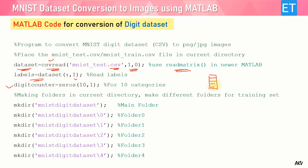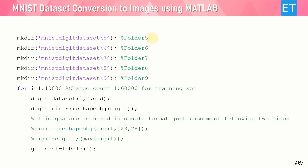I'm setting a digit counter of 10 rows and 1 column — a column array of 10 counters — to count how many images there are for each category. It also helps in deciding the file name of each image. Then there are commands to make the folders: mkdir for 'mnist_digit_dataset' as the main folder, then 10 subfolders for each digit. I set a for loop from 1 to 10,000 because there are 10,000 images in the test file. For the training set it should be 1 to 60,000.